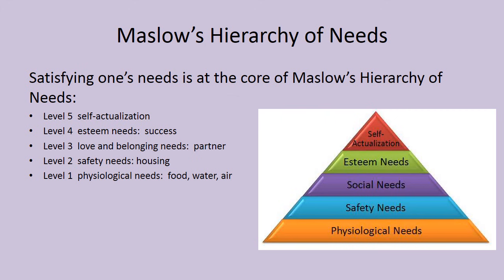Level three are the love and belonging needs — our social needs: having a partner, friends, and family. Level four is esteem needs — that success, that feeling that you have made a difference in the world. And finally, level five is what we all hope to achieve: self-actualization, achieving the highest level of what we're possible of, what we have potential for — that kind of Oprah Winfrey moment where we achieve the most we can possibly achieve in our lives.